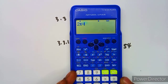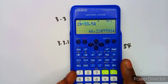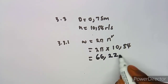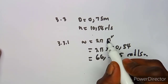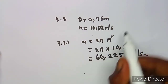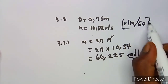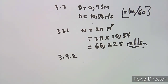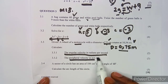Calculating 2π × 10.54 gives ω = 66.225 radians per second. Note: n must be in revolutions per second to obtain radians per second. If n were in revolutions per minute, you would first divide by 60.